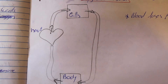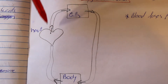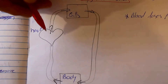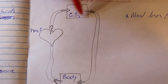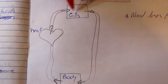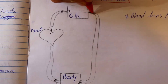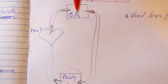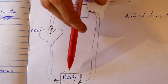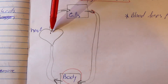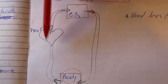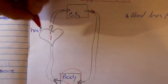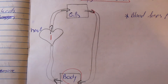Fish, for example, do not have a double circulatory system. From the heart, blood is pumped to the gills where it's oxygenated. The oxygenated blood goes to the body where the body takes up the oxygen, and deoxygenated blood travels back to the heart. So blood passes through the heart only once per cycle.